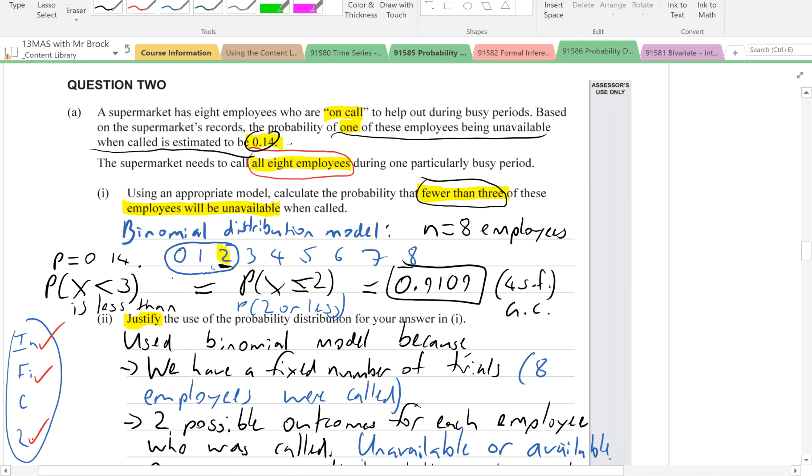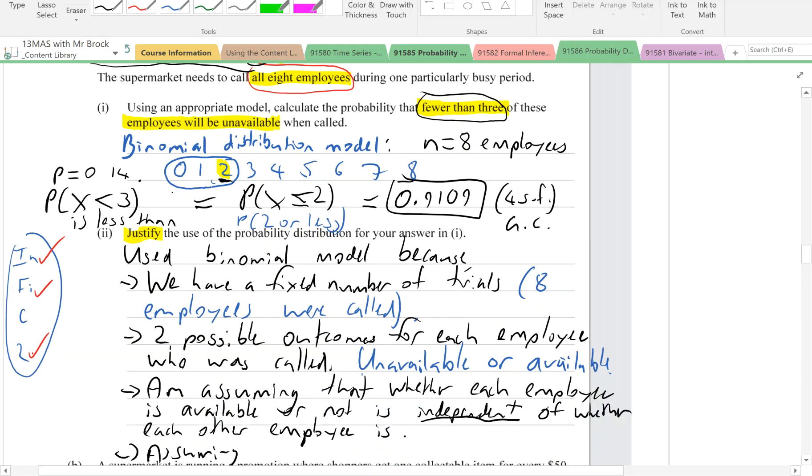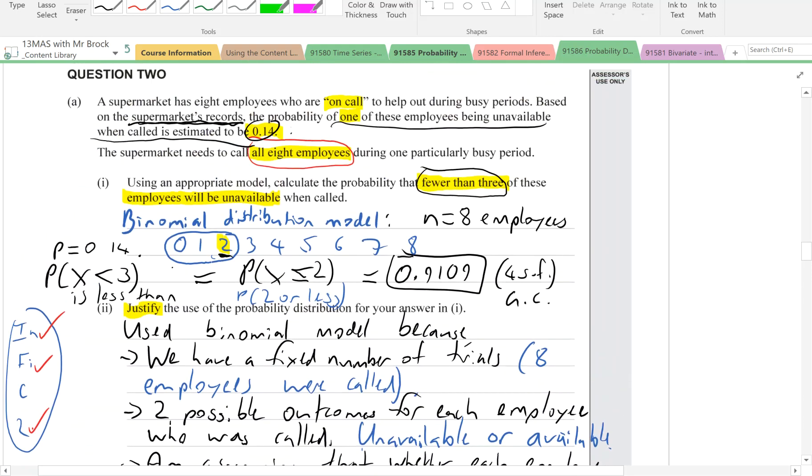All we know is that that's based on the supermarket's records. So we can't really know for sure that that's going to be the true chance of all eight of those employees. That's something we're having to assume, we're having to hope.